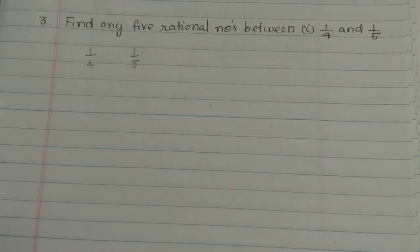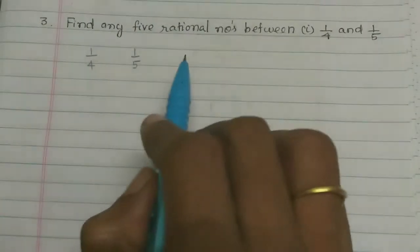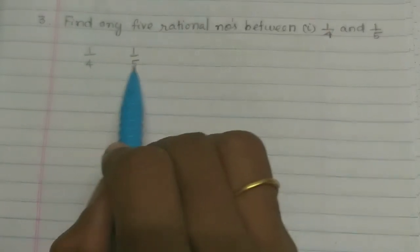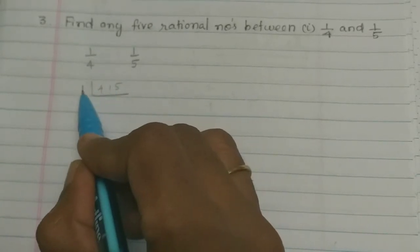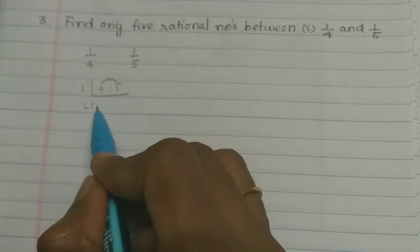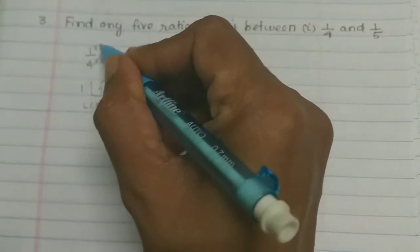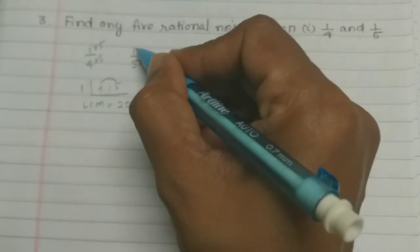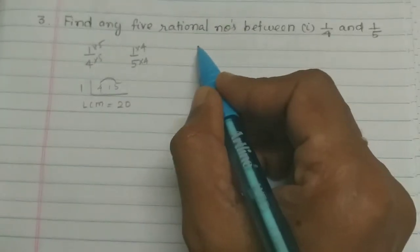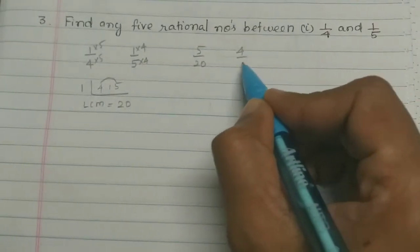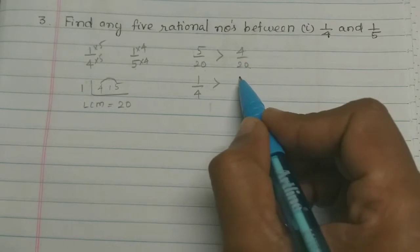This is the second method. Keep 1 by 4 and 1 by 5, and make the denominators equal. We can start with the LCM of 4 and 5. LCM of 4 and 5 is 20. So 1 by 4 becomes 5 by 20, and 1 by 5 becomes 4 by 20. Therefore, 5 by 20 is greater than 4 by 20, meaning 1 by 4 is greater than 1 by 5.